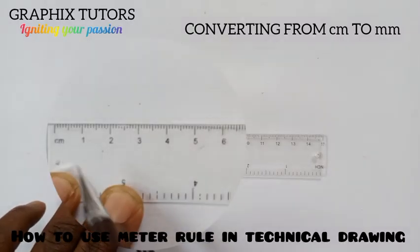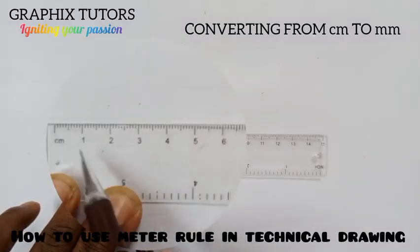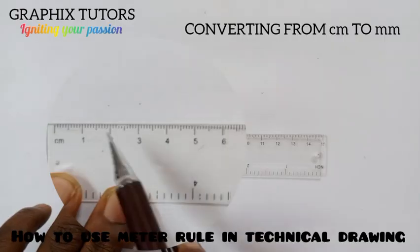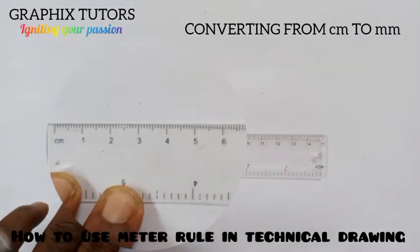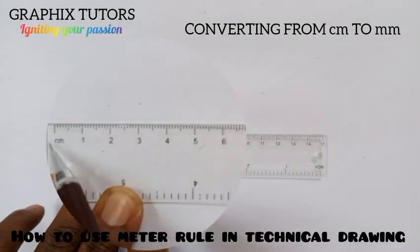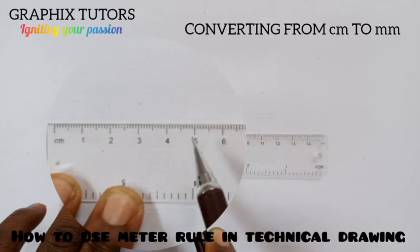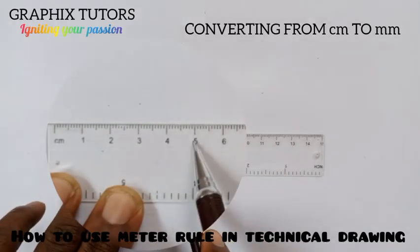So if I move from zero to two, automatically I'm having 20 millimeters. It means two centimeters equals to 20 millimeters. If I move from zero to five, it means 50 millimeters. So 50 millimeters means it goes to five centimeters.